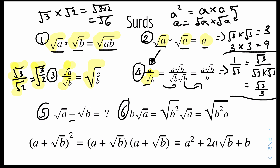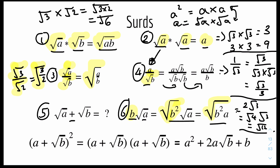Rule number 6: B root A. For this rule, we combine the two constants into one whole surd. We know that B equals the surd of B squared, because the root and the square cancel out. Applying rule 1, these two can be multiplied together to form one whole surd: root B squared times root A becomes root B squared A. For example, 2 surd 3 becomes surd 4 times surd 3, which is surd 12. This is useful for reverse engineering a simplified answer back to unsimplified form.